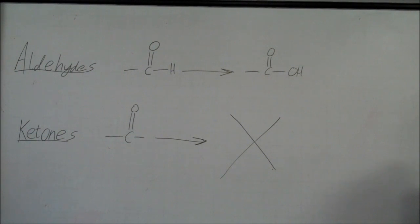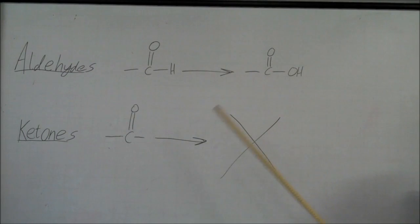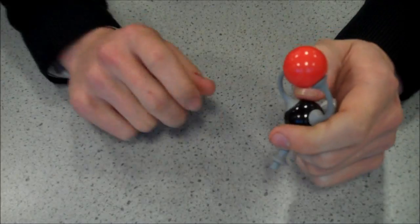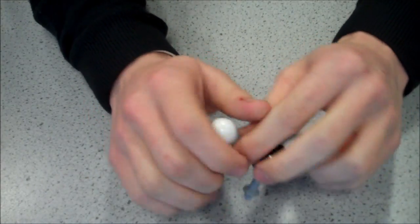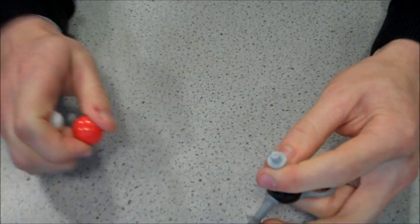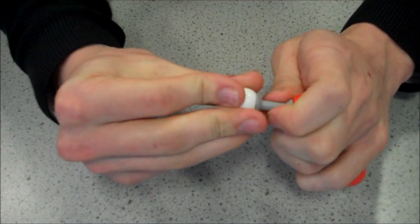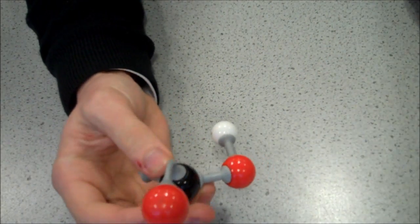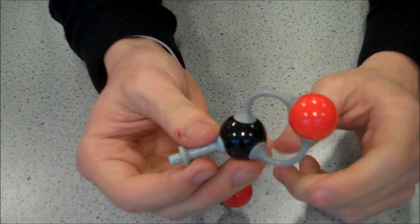We are inserting oxygen into the aldehydes. In ketones there are no hydrogens attached to the carbon bonded to the oxygen, therefore it cannot be oxidised. As you can see the aldehyde's functional group has one hydrogen. As you saw on the board, we take off the hydrogen, add in the oxygen, and you get the acid. As you can see on the ketone, you have no hydrogen so it cannot be oxidised.